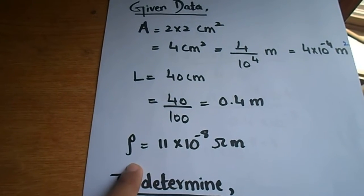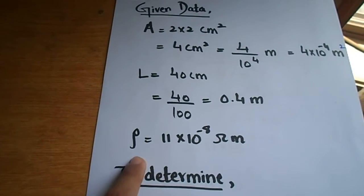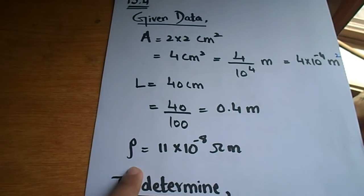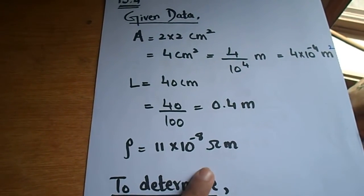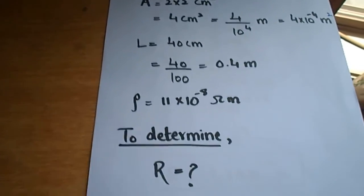After that, we have the resistivity of iron given. We know that the resistivity is a characteristic of a particular material, so the resistivity of iron is 11 into 10 to the power minus 8 ohm meter. We have to find R.